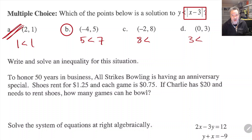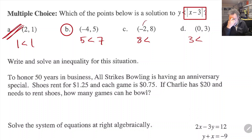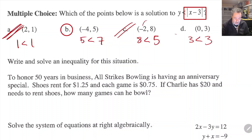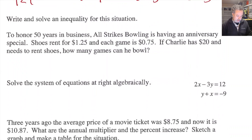Is it the only one? It looks like B is working. For choice C, negative 2 goes in: negative 2 minus 3 is negative 5, absolute value of negative 5 is 5, and this says 8 is less than 5 — no. The last option, plugging in 0: 0 minus 3 is negative 3, absolute value is 3, and 3 is less than 3 — no. So B is the only choice that worked; it said 5 is less than 7.